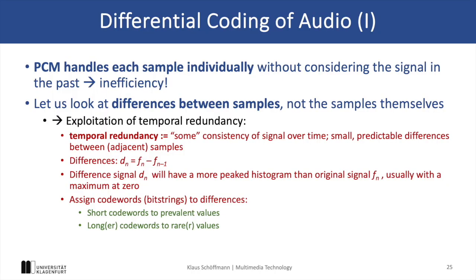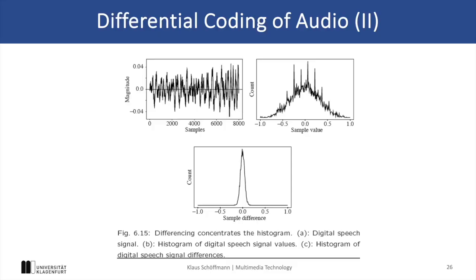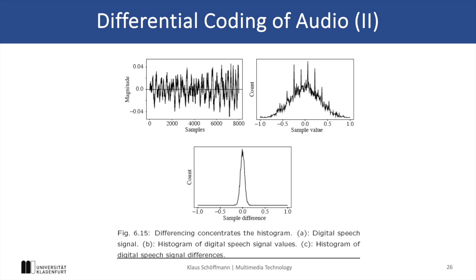Assigning shorter codewords to frequently occurring values and longer codewords to less frequent ones allows for more efficient encoding, and this is a key concept in audio compression algorithms. The histogram of sample values shows a concentration close to zero but still a wide range of possible values. In the histogram of consecutive differences, however, we see a much stronger focus around zero with a much more narrow distribution, which can be much more efficiently encoded because fewer bits can be assigned to common difference values, thereby optimizing the compression.